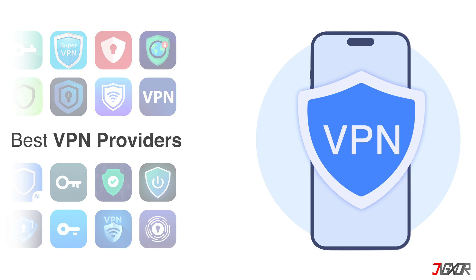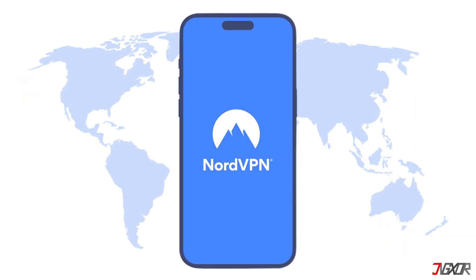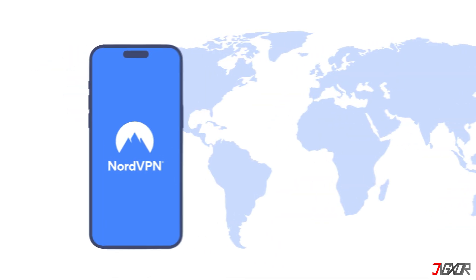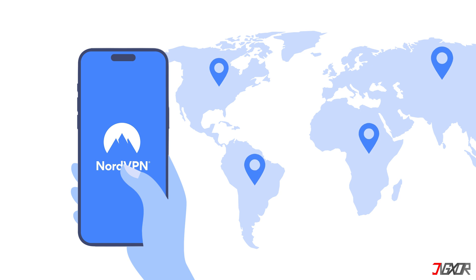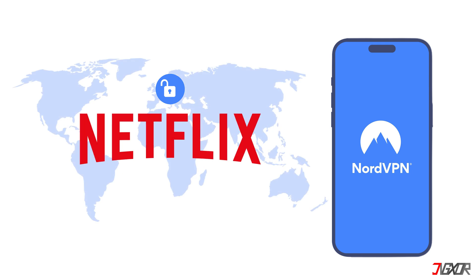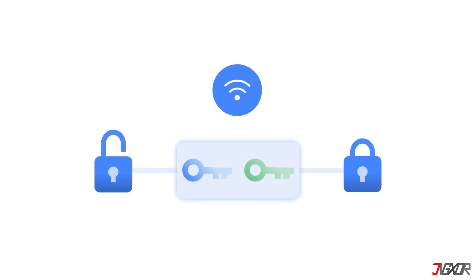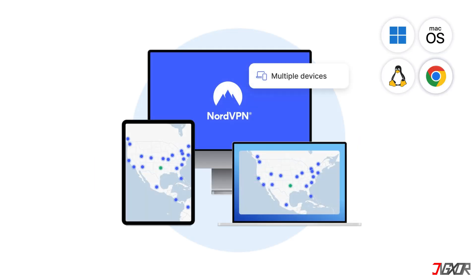With so many VPN providers available, selecting the right one can be challenging. I've tested them, and based on my personal experience, NordVPN consistently delivers the best performance. You can access servers in numerous countries worldwide — more servers mean more Netflix movies you can watch. It has proven success in bypassing Netflix's geo-blocks, smooth streaming without buffering, and strong encryption to protect your online privacy. It's also available on all devices, including Mac and Windows, if you want to watch content on a laptop as well.